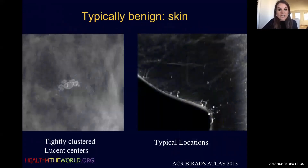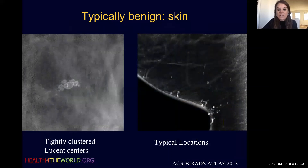We're going to start with skin calcifications, which we see all the time. These calcifications tend to be tightly clustered with lucent centers, as we see nicely on the image on the left. This is pathognomonic for calcifications within the skin, a benign finding. They also occur in typical locations: the inframammary fold, the axilla, the areola, and in the cleavage area.